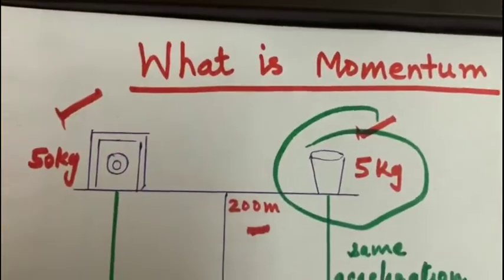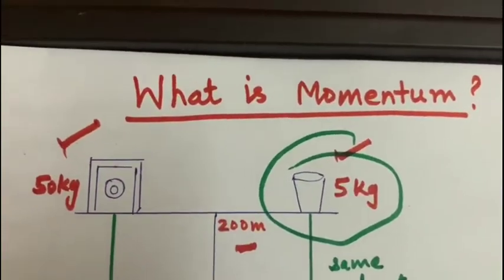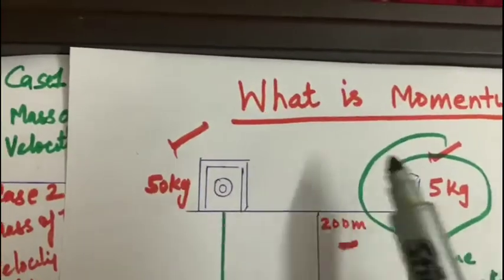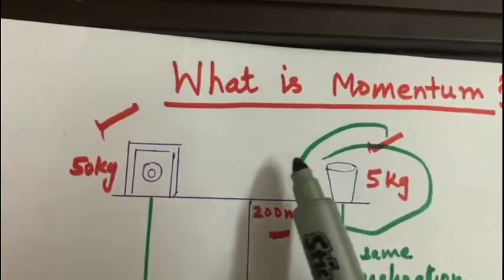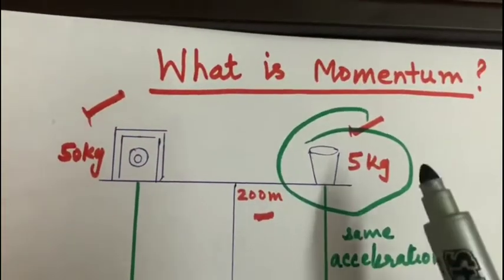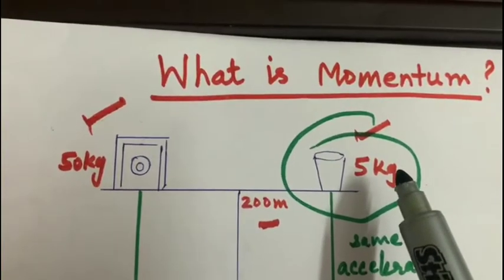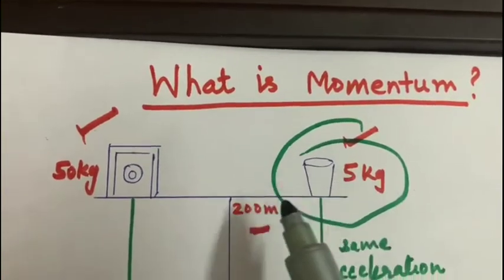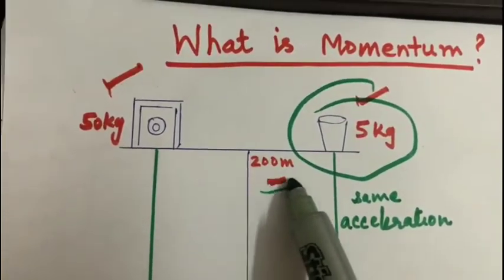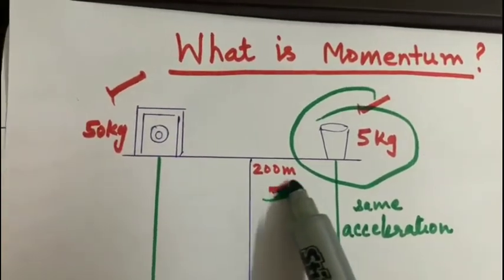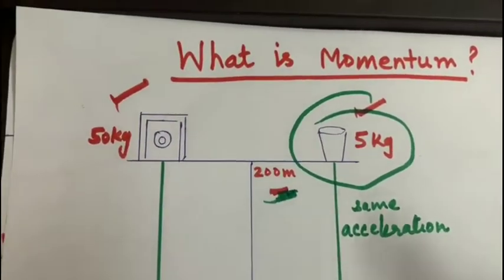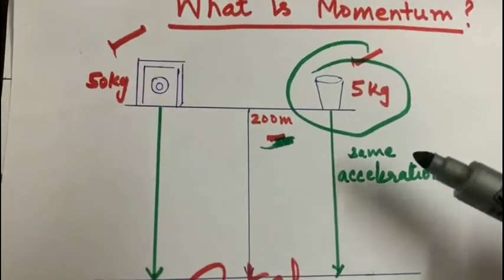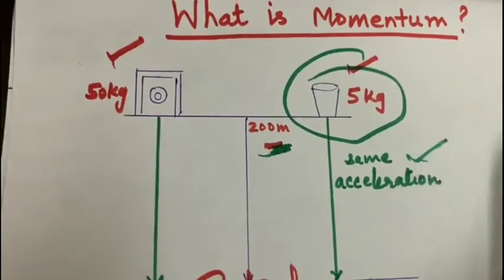Let us consider two objects, one having 50 kg mass and another having 5 kg mass. They are kept at the height of 200 meters. Now if they fall, they will fall with the same acceleration.